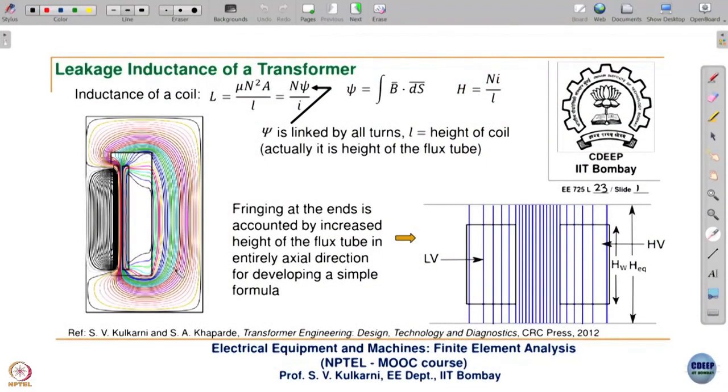Effectively in the transformer equivalent circuit we are assuming X_m as sort of infinity, because magnetizing current is zero. I hope you understood this leakage field plot.